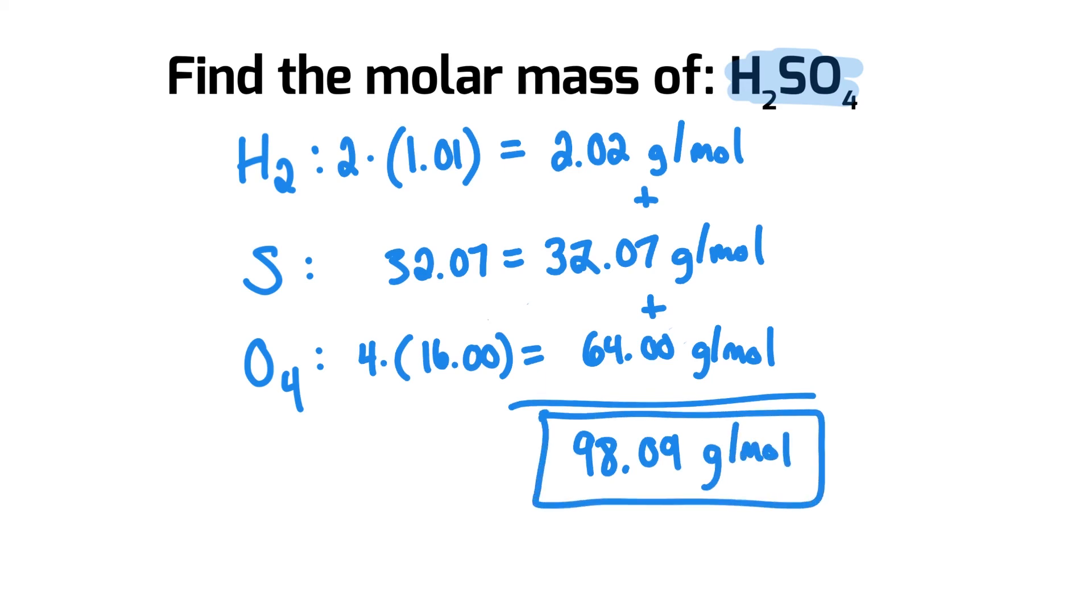And you can repeat this for many other compounds, again identifying the individual components, the individual elements that are present, how many of them there are, and multiplying that by the atomic mass to eventually add them up to get the final in grams per mole as we've done in this video.